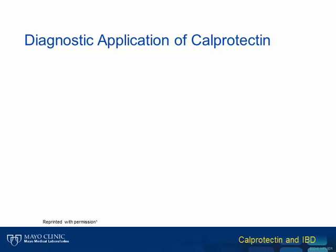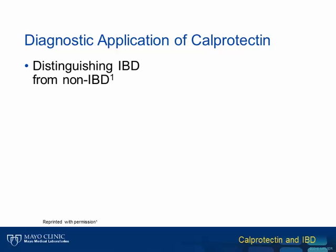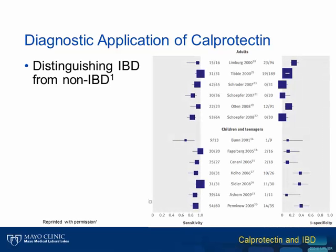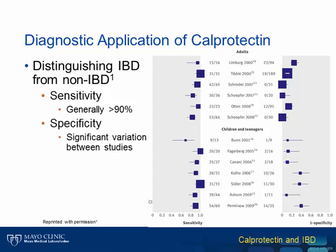Numerous studies have addressed the diagnostic utility of calprotectin related to IBD. In a recent meta-analysis, several studies which looked at the ability of calprotectin to distinguish IBD from other GI diseases were evaluated. This figure shows the sensitivities and specificities of calprotectin in both adult and pediatric populations in the various studies included in the meta-analysis. Overall, most studies showed that calprotectin has a sensitivity of greater than 90% for the diagnosis of IBD. However, in terms of specificity, there was much more variability, especially in the pediatric populations.